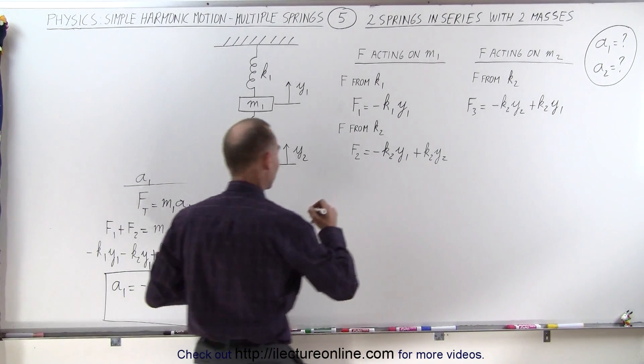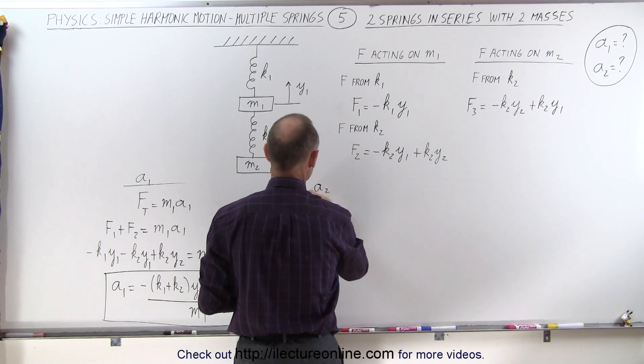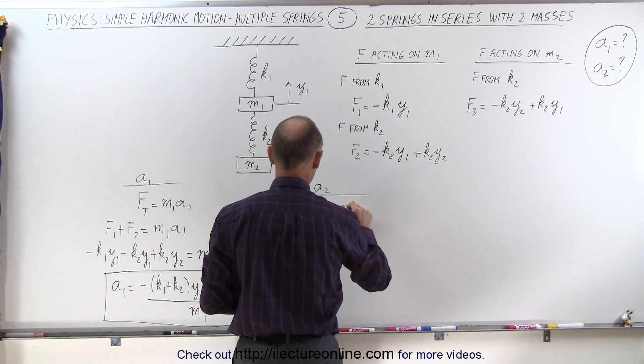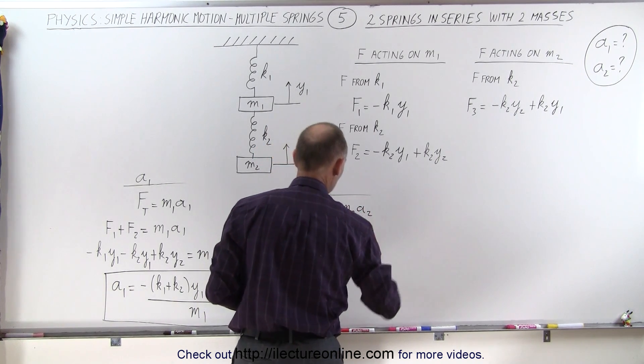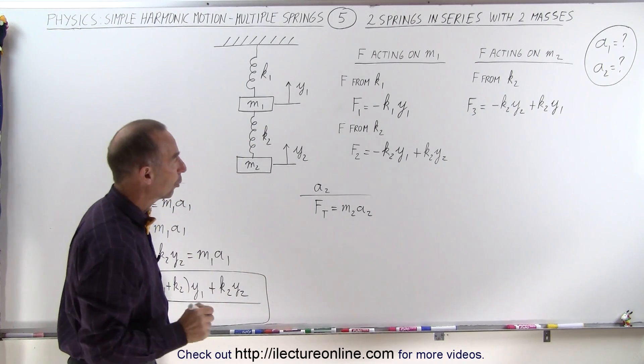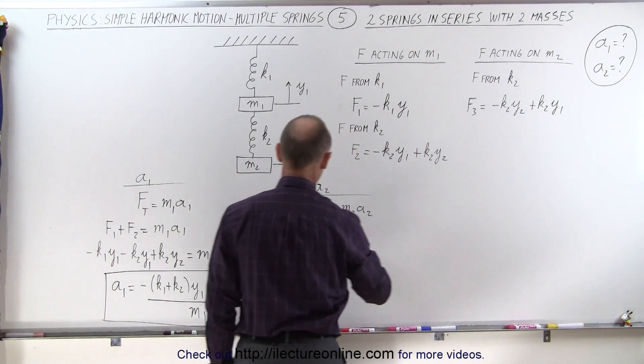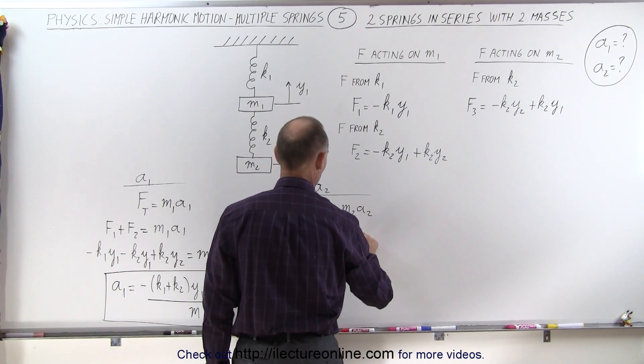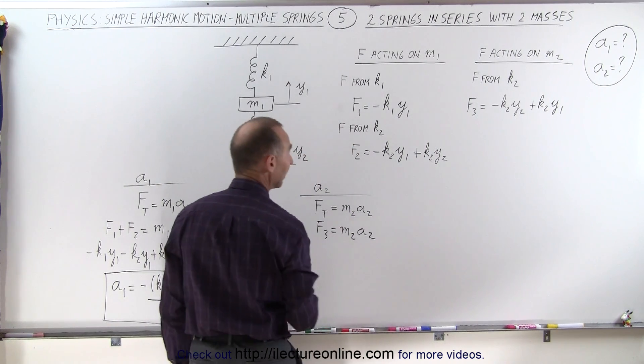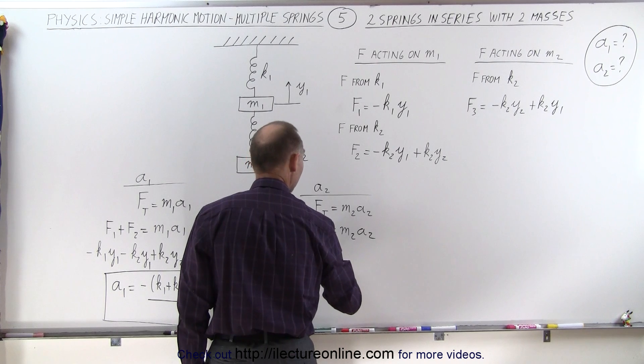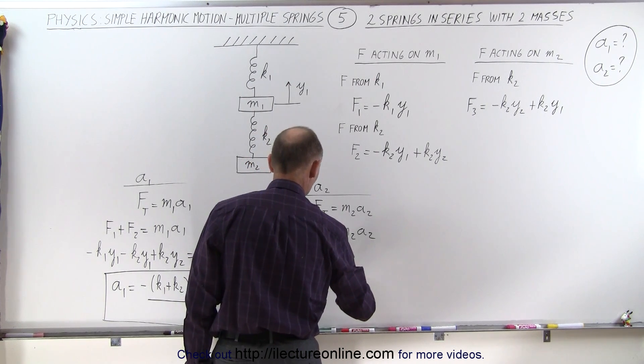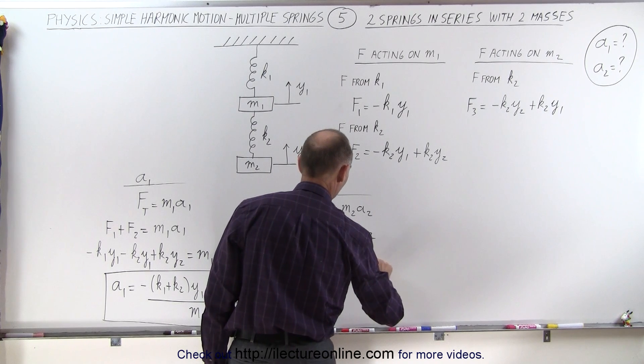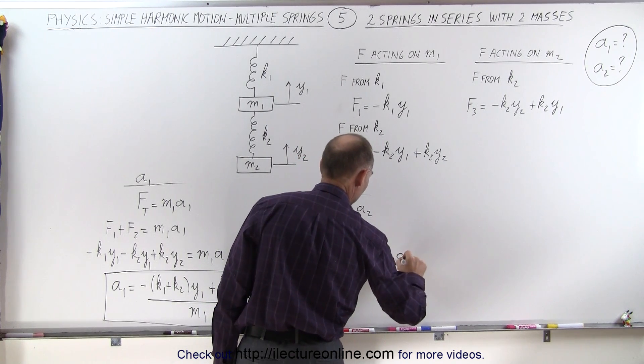If I now want to find the acceleration of a2, again, I write f total is equal to m2 a2. And the total is going to be f3. So we can say that f3 is going to be m2 a2.